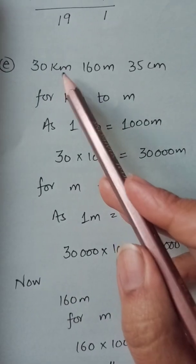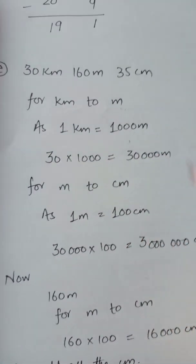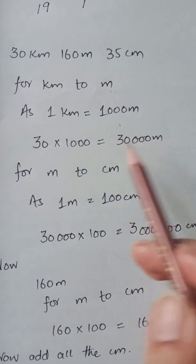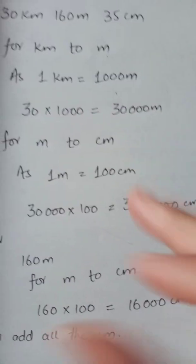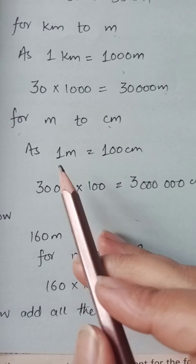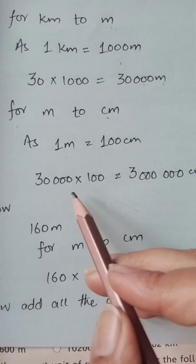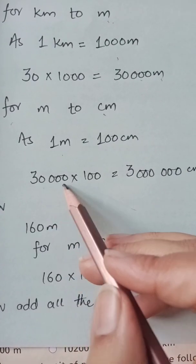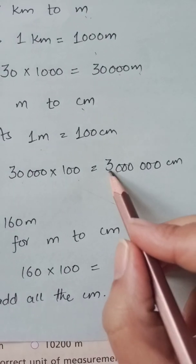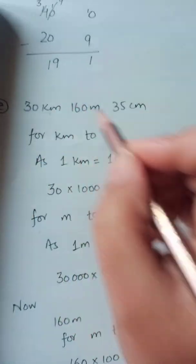We convert 30 km to meters first. Since 1 km = 1000 meters, we multiply 30 by 1000, simply adding three zeros: 30,000 meters. Now we convert 30,000 meters to centimeters. Since 1 meter = 100 cm, we multiply 30,000 by 100, giving us 3,000,000 centimeters. So 30 km = 3 million centimeters.